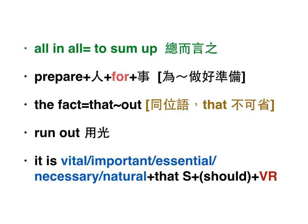同位語打括號到前面的the fact，當同位語的時候that不可以省略。他說能源已經快要用光了，run out就是快用光了，它是一個worsening令人煩惱的問題。It is vital that we conserve energy resources, and meanwhile explore alternative ones that are not harmful to the environment。